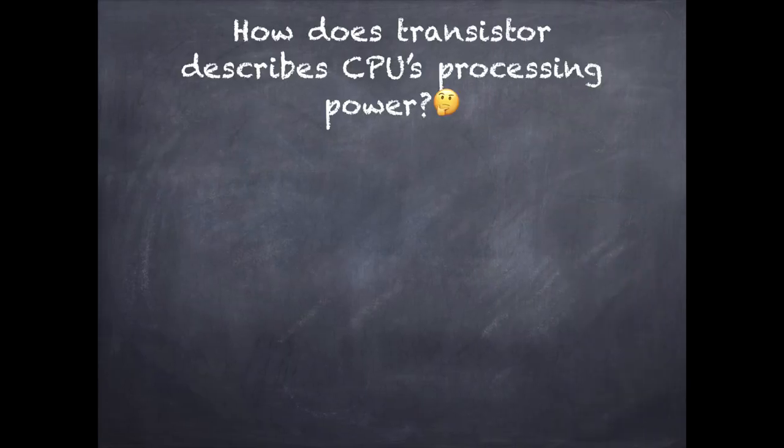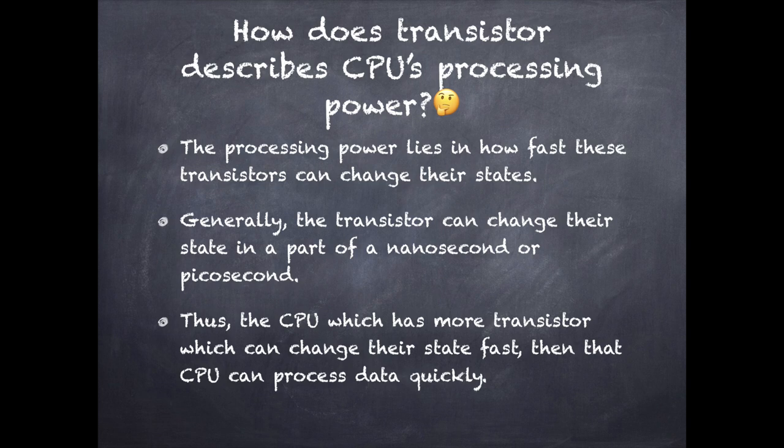How does transistor describe CPU's processing power? The processing power lies in how fast this transistor can change state. Generally the transistor can change state in a part of a nanosecond or picosecond. Thus, the CPU which has more transistors which can change state fast can process data quickly.